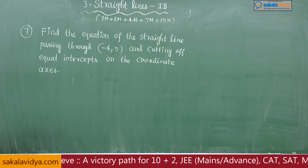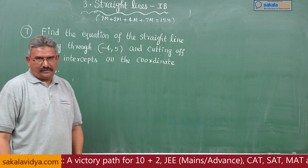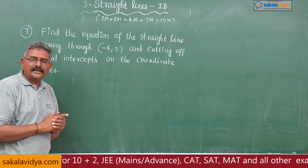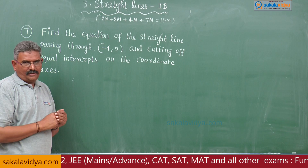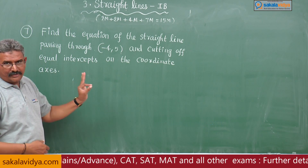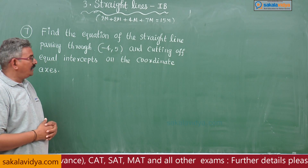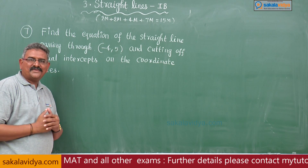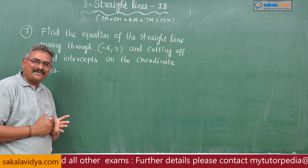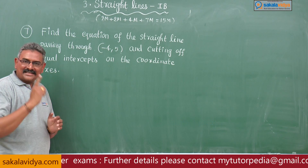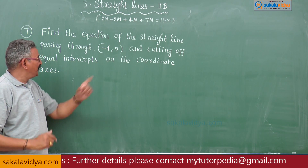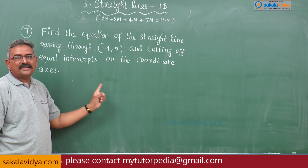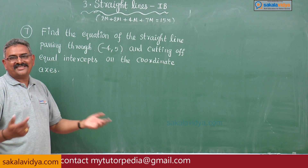This is a very important problem, even for engineering entrance examinations. So, very simple to remember: x plus y is equal to minus 4 plus 5, which is 1. So, x plus y minus 1 is equal to 0 — that is the answer.